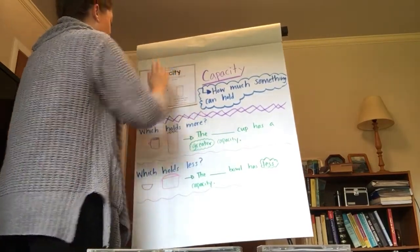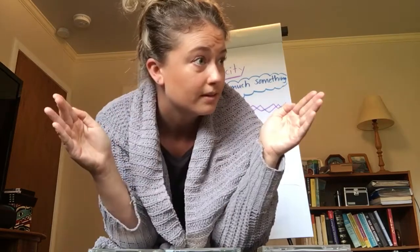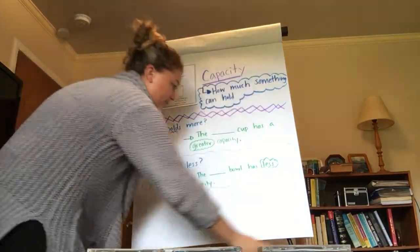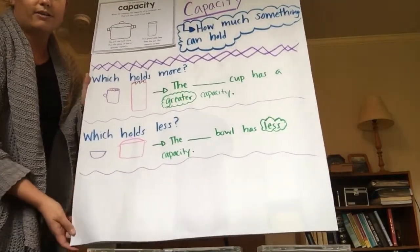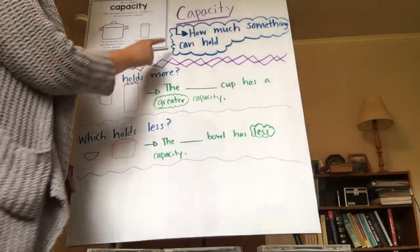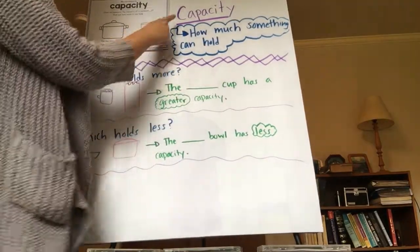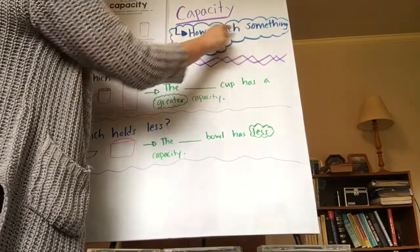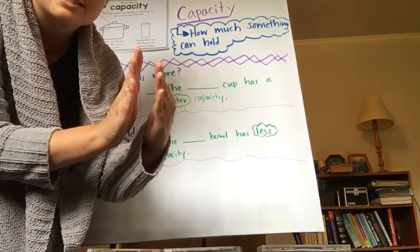My turn, your turn — use your fingers. Ready? Greater capacity, less capacity. Let's take a look at our board. I got a new pad of paper, which is super exciting, but it's a little heavy. So friends, capacity is how much something can hold. My turn, your turn: capacity — how much something can hold. Greater capacity, less capacity.